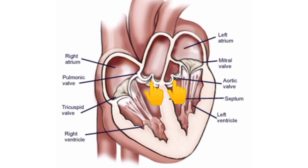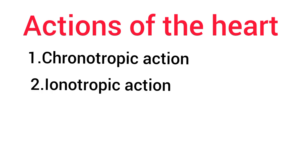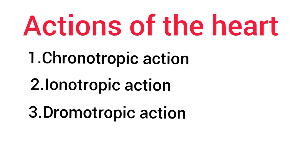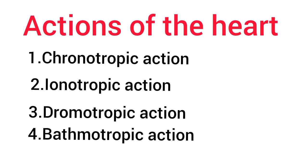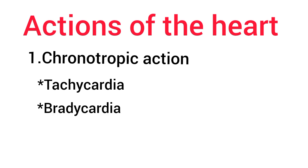The actions of the heart are classified into four types. Number one is the chronotropic action, which is the frequency of the heartbeats or the heart rate. It is of two types: tachycardia, or increase in the heart rate, and bradycardia, or decrease in the heart rate.